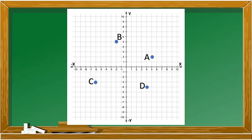Let's take an example. Let's determine the coordinates and the quadrant where the points A, B, C, and D lie. For our point A, the coordinate is five and two, and it is located in our first quadrant. As you can see, the sign of the ordered pair in our first quadrant is positive and positive.